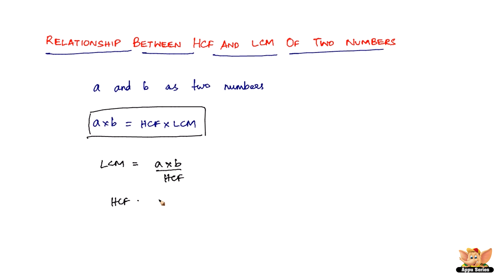Or HCF equals a times b divided by LCM. Remember, a and b are the two numbers whose LCM you're finding by using their HCF. But again in this case also a and b are those two numbers whose HCF you're finding by using its LCM as well.